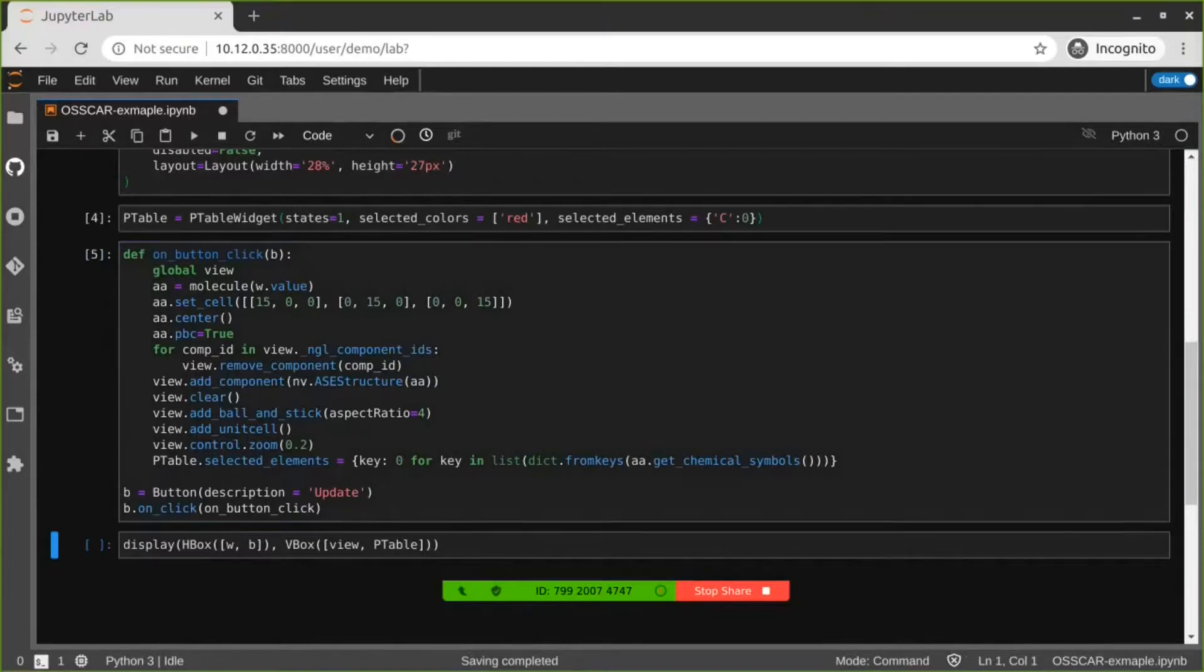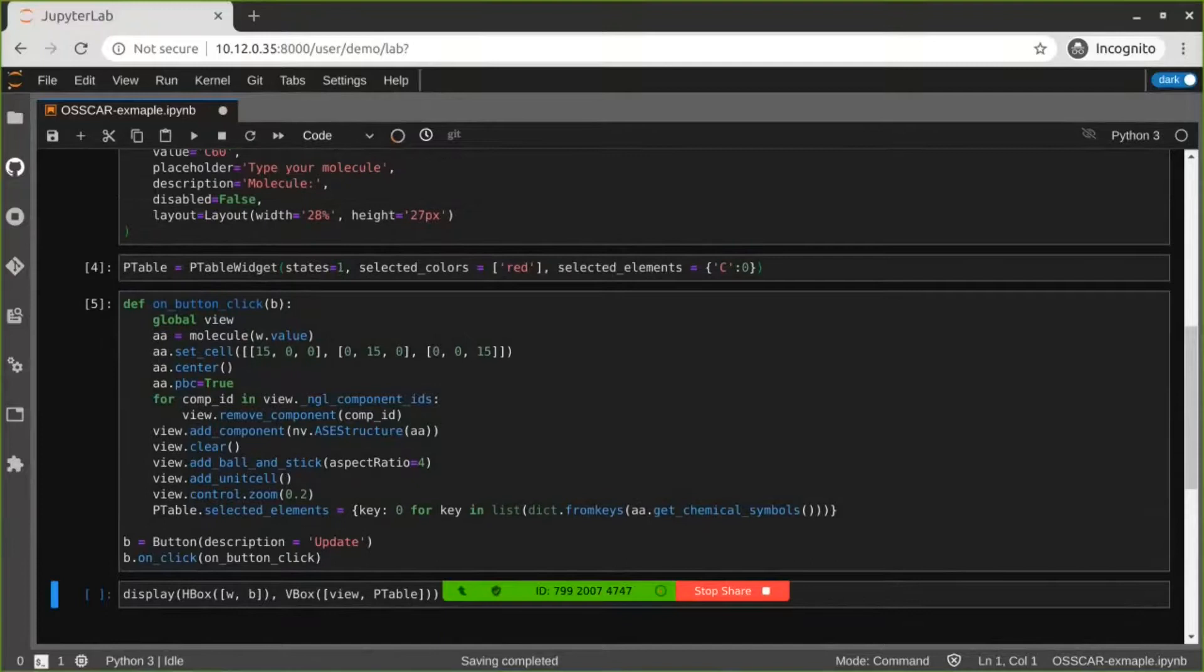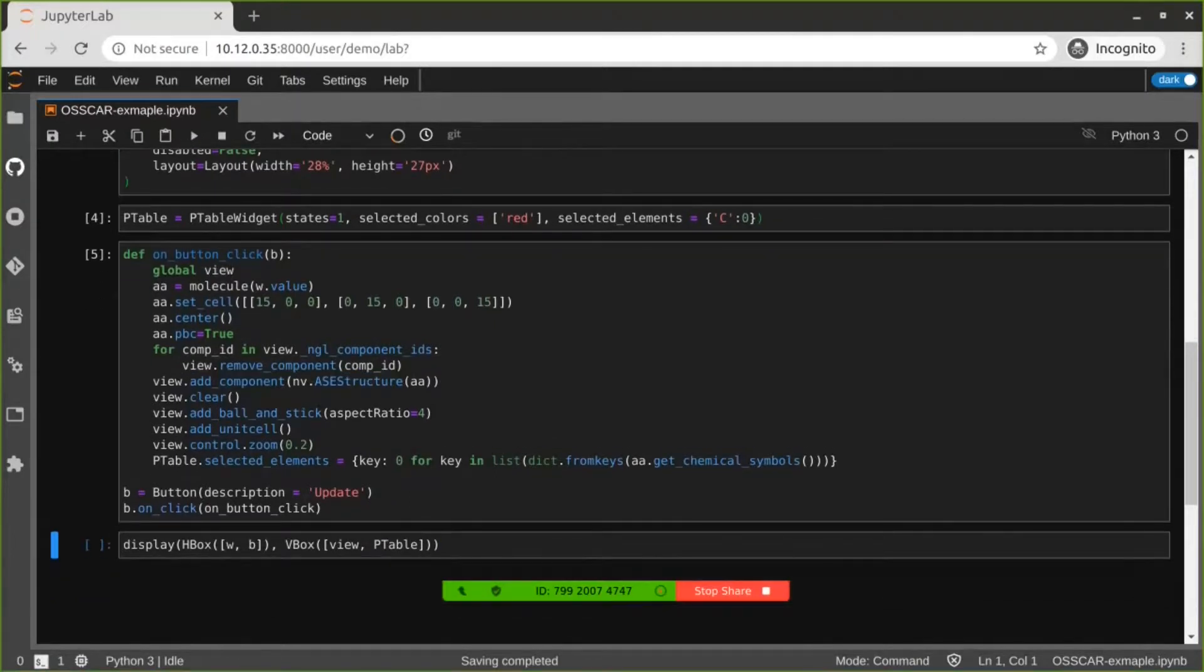We also define an update button. Every time we click the update button, it will call this onButtonClick function. Inside the function, it obtains the molecule name from the text area, and then uses the molecule function to get the structure, and then sends it to the NGL molecular visualizer. The periodic table also updates the selected elements.